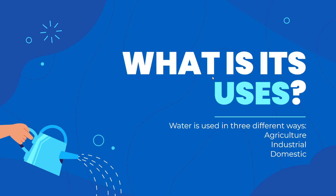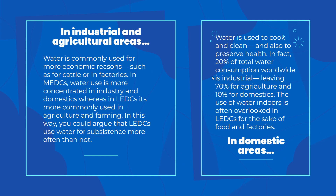Water is used in three different ways: agriculture, industrial, and domestic. We're going to explore all of these later on. In industrial and agricultural areas, water is commonly used for more economic reasons, such as cattle or in factories. In industries, they may use it to turn it to steam to turn turbines to make energy or electricity, or to cool down machinery.